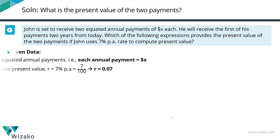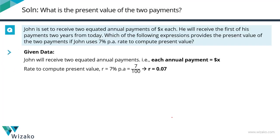Key data: he is going to receive X dollars as two equated annual installments, so each of the two payments is going to be for X dollars. The rate used to compute the present value is seven percent — expressed as a fraction that is 7/100, and expressed as a decimal it is 0.07. The formula will use the rate of interest per annum expressed as a decimal, which is why I did this conversion right away.